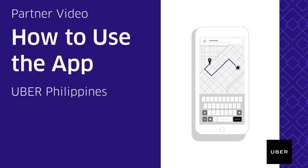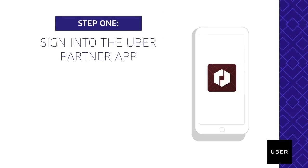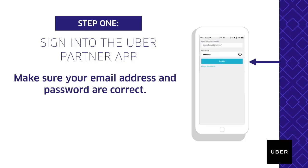Today, we will discuss how to use the Uber Partner application on your smartphone. Step 1: Upon opening the Uber Partner application, tap on Sign In. All Uber drivers need their own username and password. Your username is the email address you used to sign up for Uber. Make sure your login details are correct.